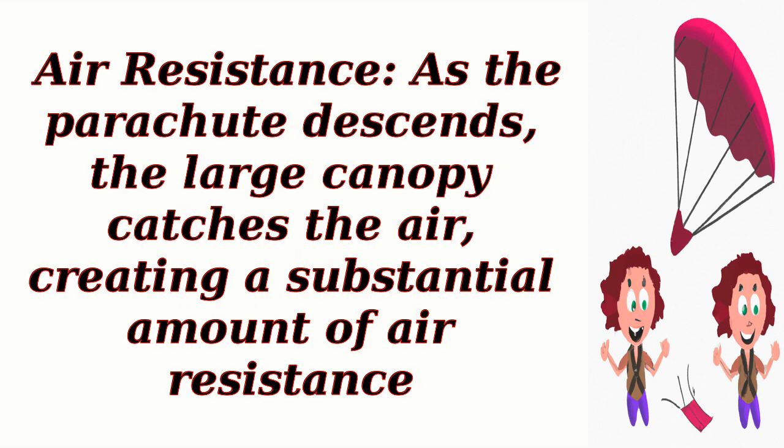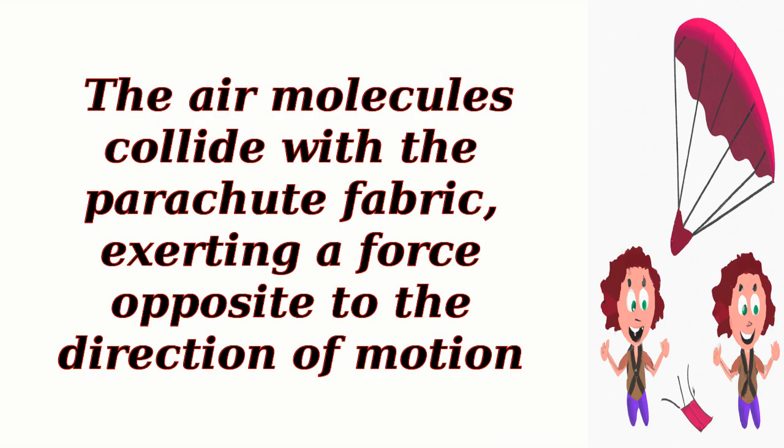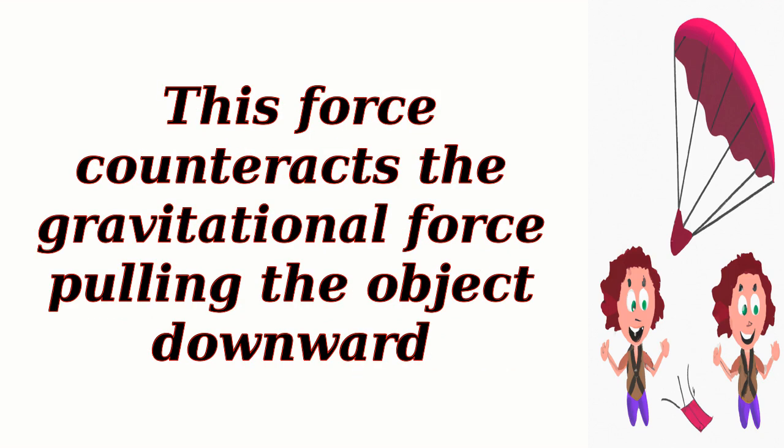Air resistance: As the parachute descends, the large canopy catches the air, creating a substantial amount of air resistance. The air molecules collide with the parachute fabric, exerting a force opposite to the direction of motion. This force counteracts the gravitational force pulling the object downward.